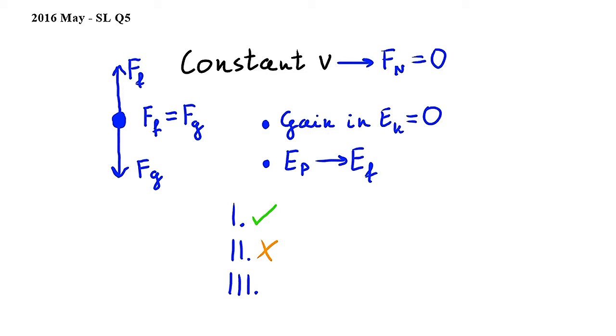Since the frictional force and the gravitational force have the same magnitude as we have concluded earlier, and they point in opposite directions, the magnitude of the work done by these forces will be equal. This means that statement three is correct, and the answer to this question is B.